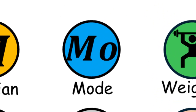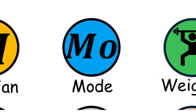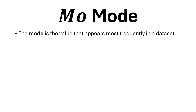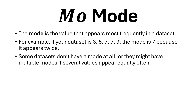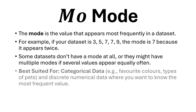Mode. The mode is the value that appears most frequently in a dataset. For example, if your dataset is 3, 5, 7, 7, 9, the mode is 7 because it appears twice. Some datasets don't have a mode at all, or they might have multiple modes if several values appear equally often.